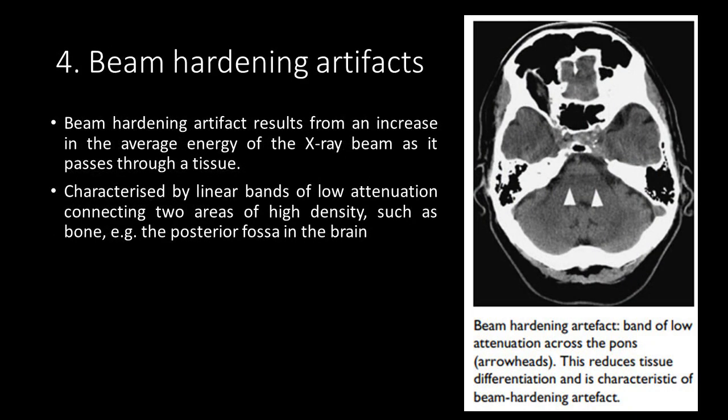Lastly, we will discuss beam-hardening artifacts. Beam-hardening artifact results from an increase in the average energy of the X-ray beam as it passes through a tissue. Think of CT as using a spectrum of radiation energy. Low-energy radiation is filtered out by high-density structures such as bone, leaving higher-energy radiation that is less absorbed by soft tissues, causing low-attenuation streak artifact. It is characterized by linear bands of low-attenuation connecting two areas of high-density, such as bone, like the posterior fossa in the brain. It can be reduced by using a filter to adjust the spectrum of radiation and by post-processing software.